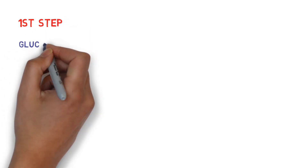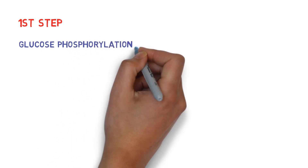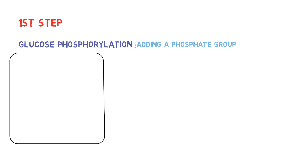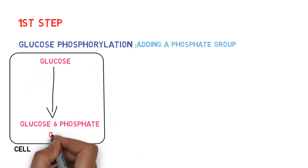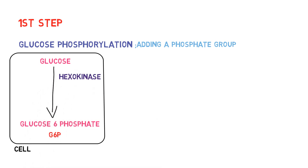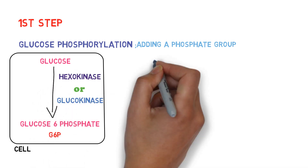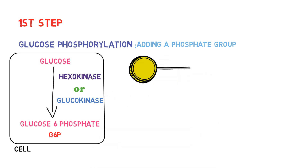The first main step of glycolysis is glucose phosphorylation, where a phosphate group is added to a glucose molecule. Glucose is converted into glucose-6-phosphate, which we call G6P. This reaction is done by either hexokinase or glucokinase. At the end of this reaction, glucose is attached with one phosphate group and one ATP has been utilized.